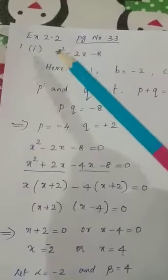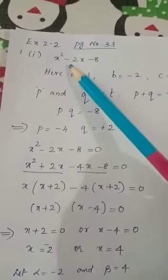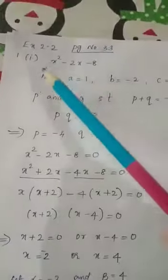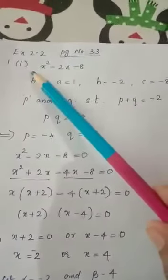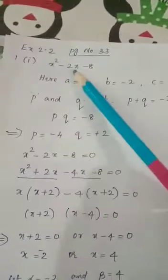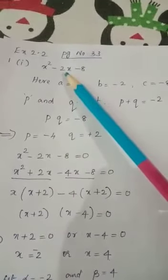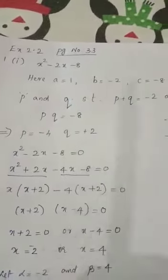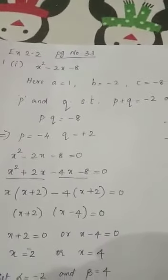To start Exercise 2.2, first question, first subdivision. A polynomial is given: x squared minus 2x minus 8. We need to verify the relation between zeros and coefficients.